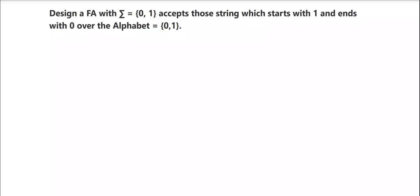Here we will see another example. Design a finite automata with sigma equal to {0,1} that accepts the strings which start with 1 and end with 0. We have to design a DFA for accepting the language where every string shall start with 1 and end with 0.